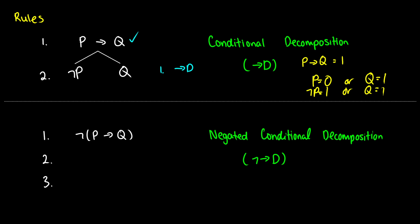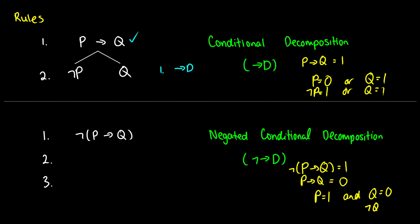What about the negated conditional? When is not (P arrow Q) true? That's true when P arrow Q is false, which happens when P is true and Q is false. Q being false is another way of saying not Q is true. So if we have not (P arrow Q), we can decompose it by getting P and not Q. We check that off and call it negated arrow decomposition.